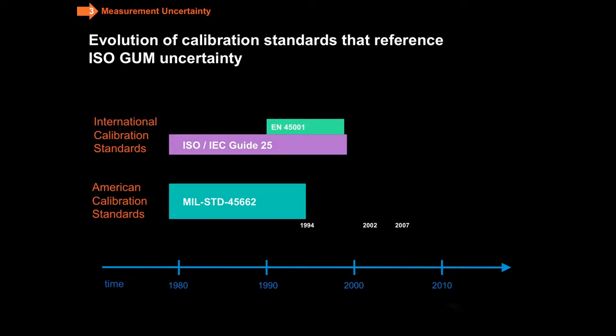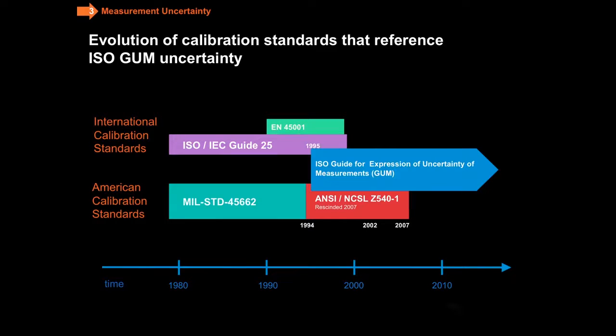Let's take a look at how measurement uncertainty is referred to formally in the various calibration standards. There's an international series of calibration standards, which is ISO guide 25 and also the European 45001. Similarly, there was a MIL standard 45662, which was oftentimes used in aerospace defense work in the Americas. MIL standards were all repealed in 1994, and that's when the NCSL organization came out with ANSI Z540-1, which replaced it at that time. The ISO guide for expression of uncertainty measurement came out in 1995.